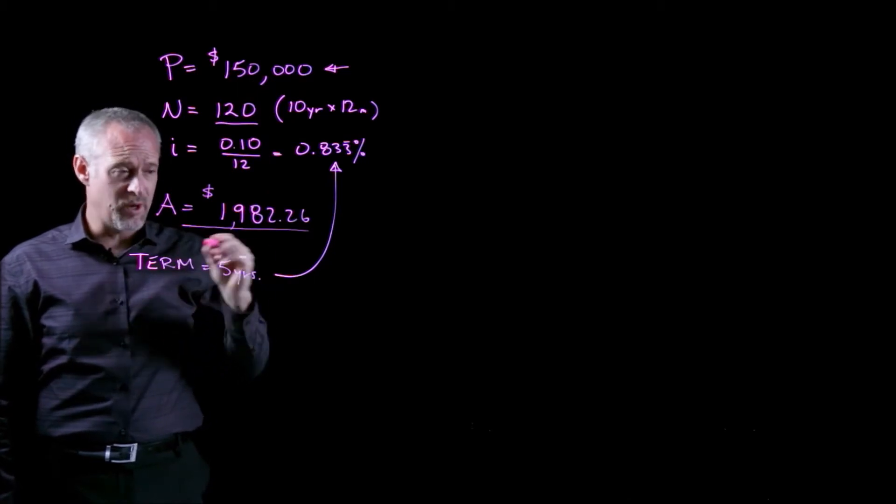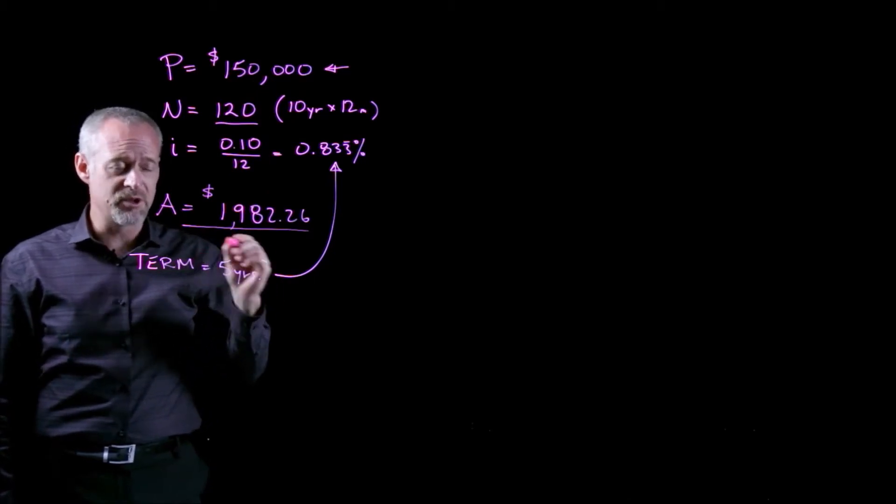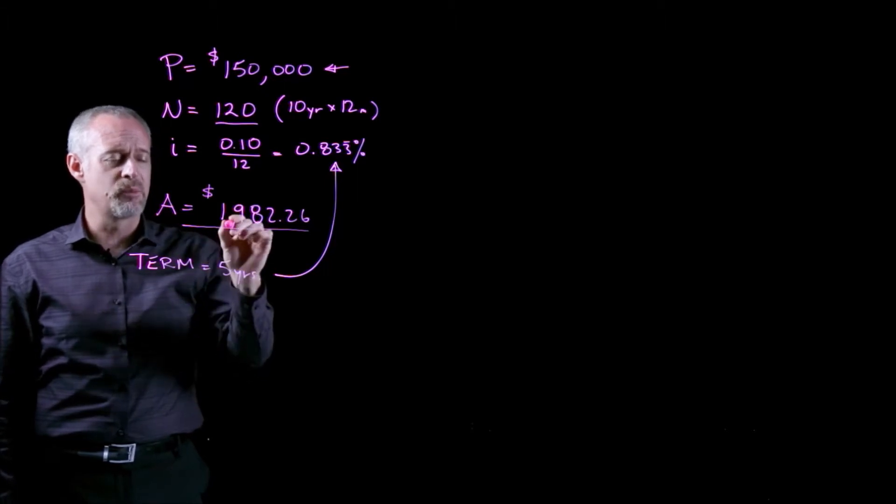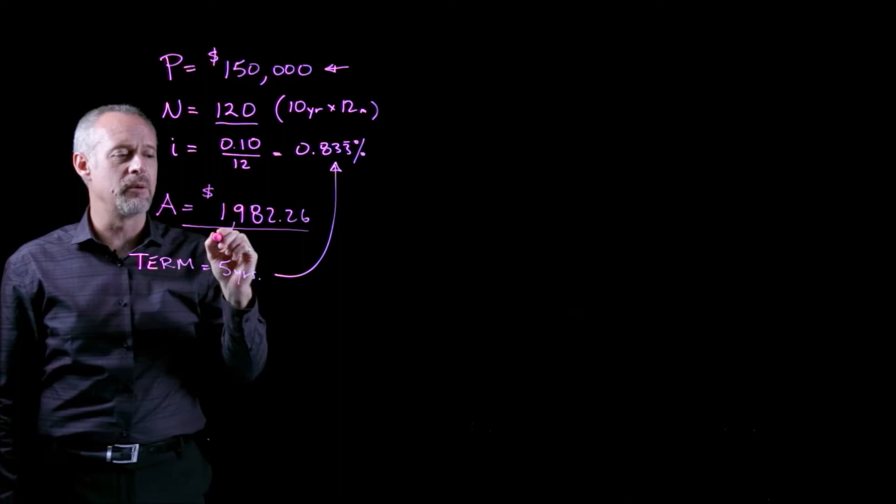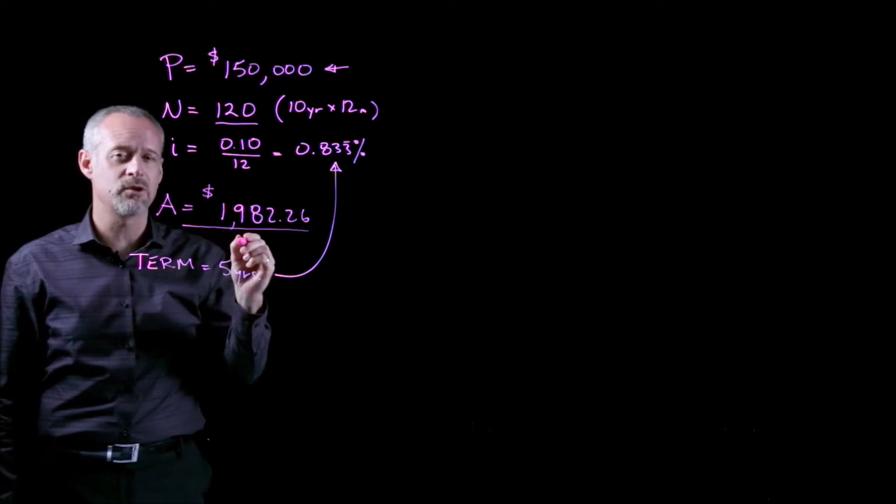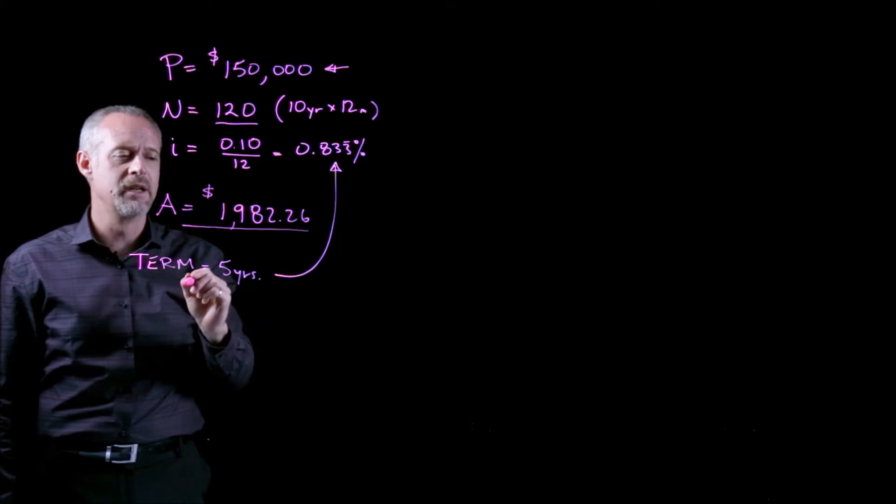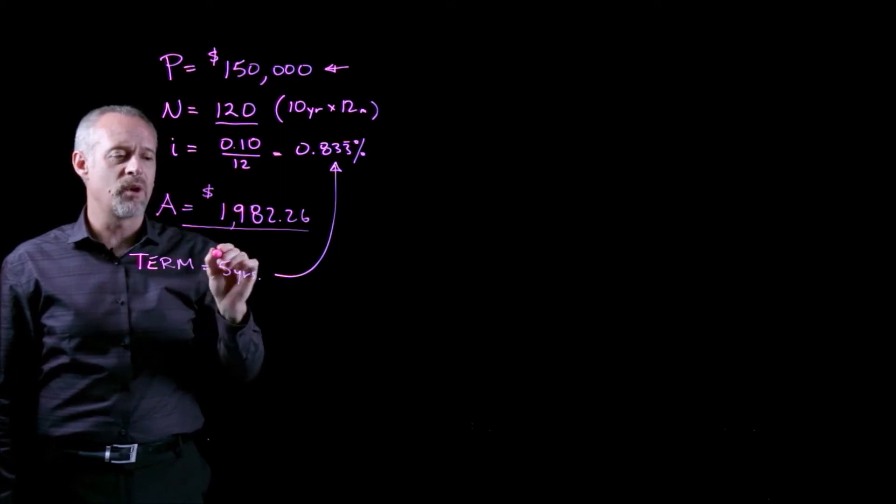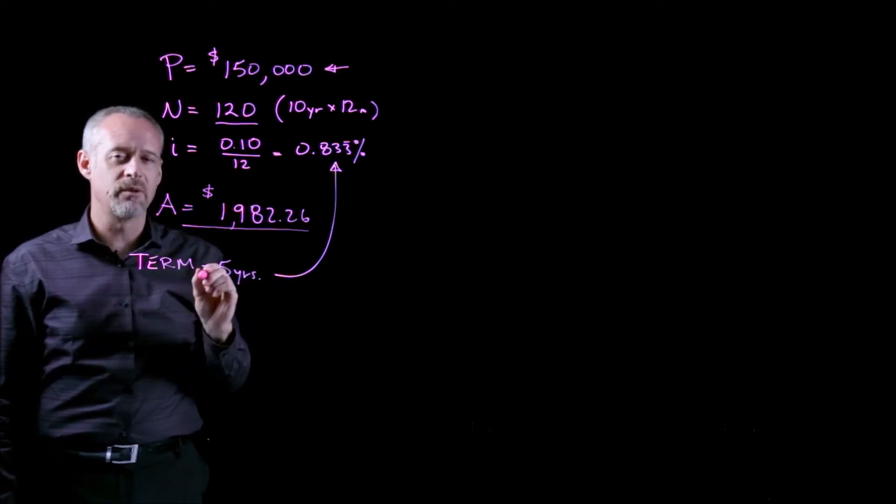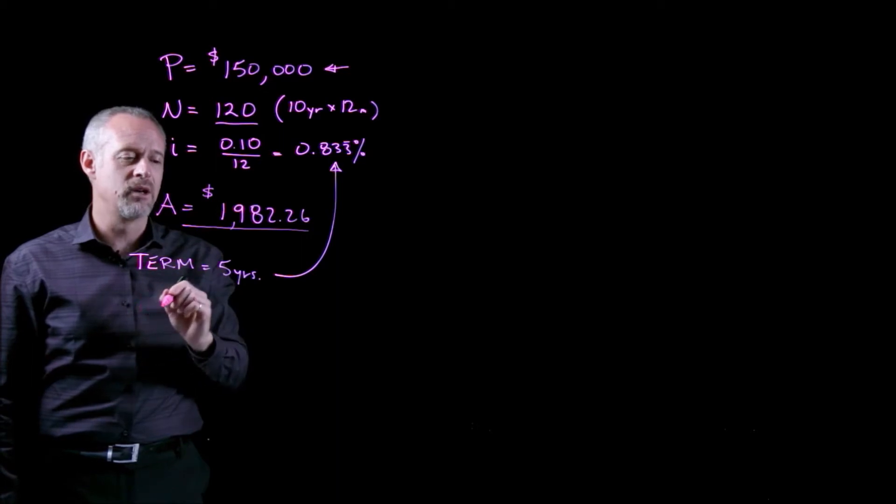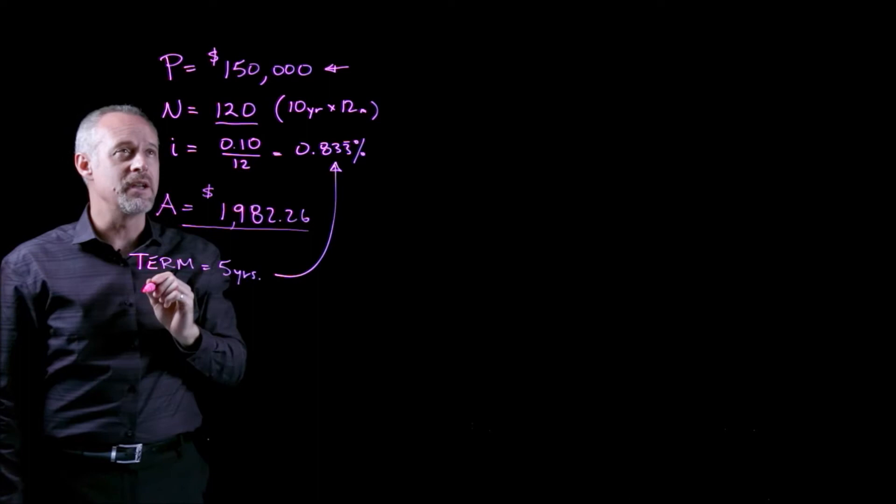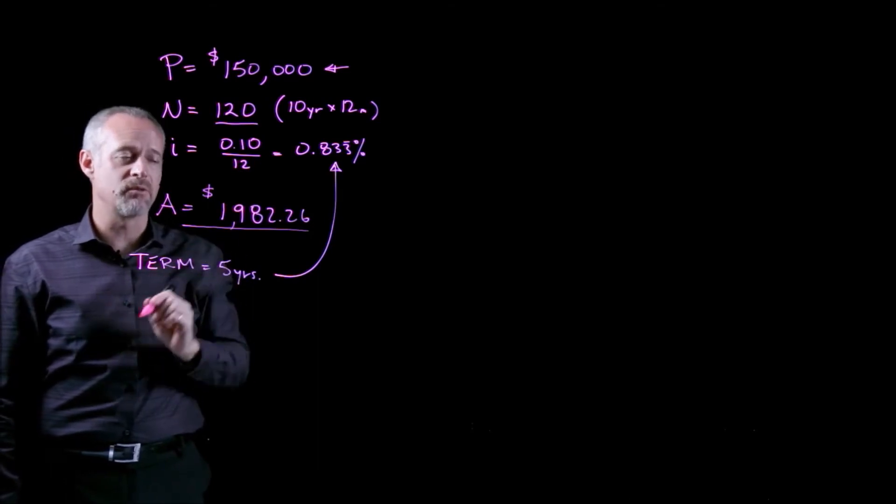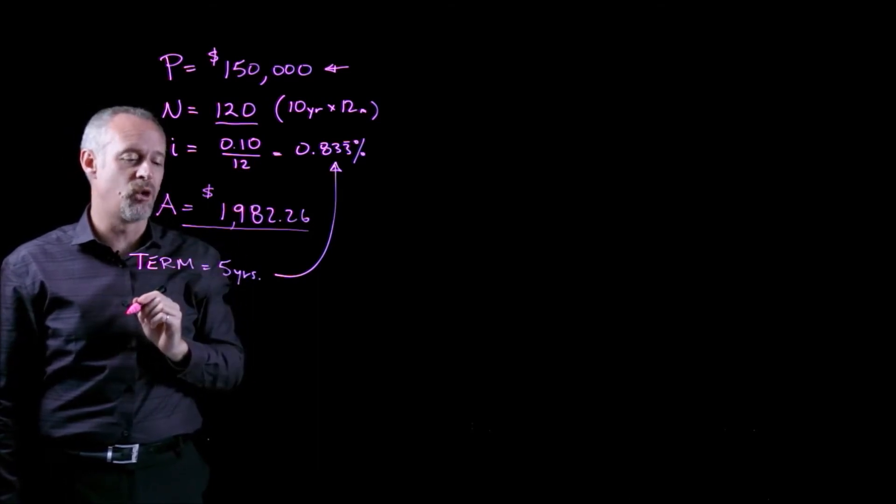But it's quite complicated. We can understand how the principal and interest payment components change over time by constructing an amortization table. But what I'd like to do is use time value of money logic to calculate how much money is still owing at the end of five years on this original $150,000 mortgage.